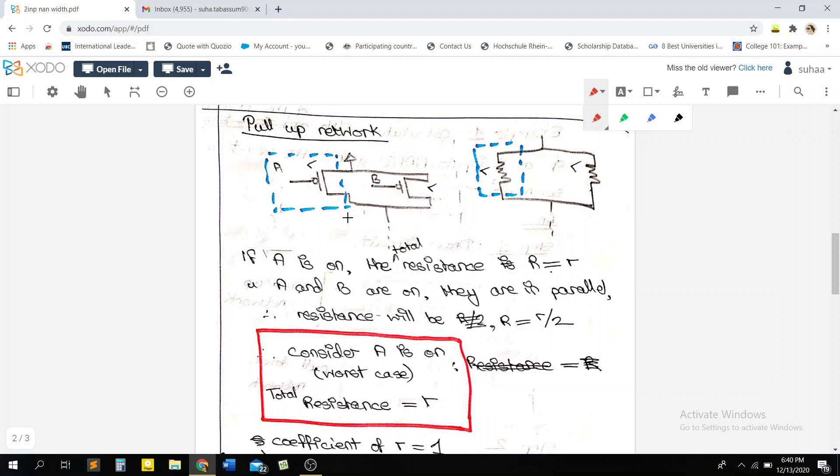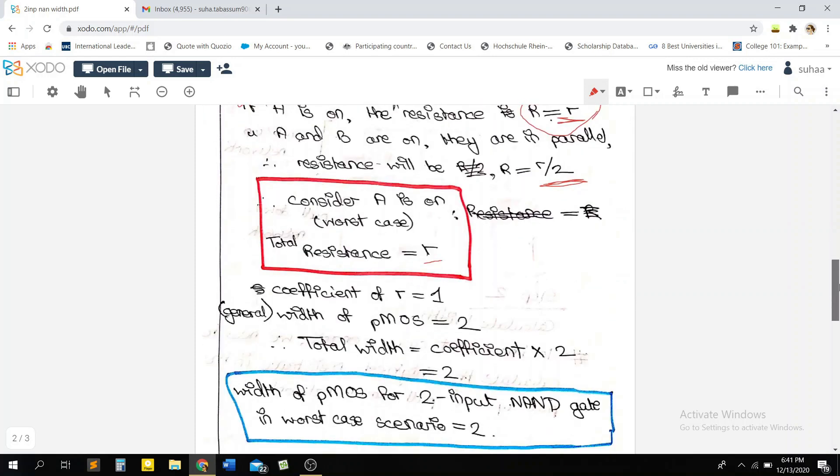We have our pull-up network here consisting of our two pMOSs, and what we have to do is either switch A on or switch both of them on in such a way that the total resistance from this whole network is highest. So let's consider that A is on and our pMOS for B is off. If this is off, then our total resistance is going to be equal to this small r here. Now for the other scenario, if both A and B are on, then both of them will be in parallel and we will get a total resistance of r by 2. Since this one is greater, we are going to take this scenario. We're going to consider that only A is on. So if A is on, then we get our total resistance of r, which is the greatest in this case.